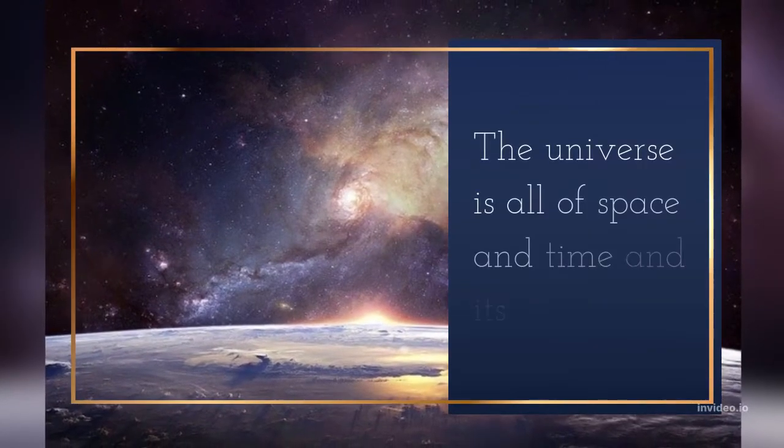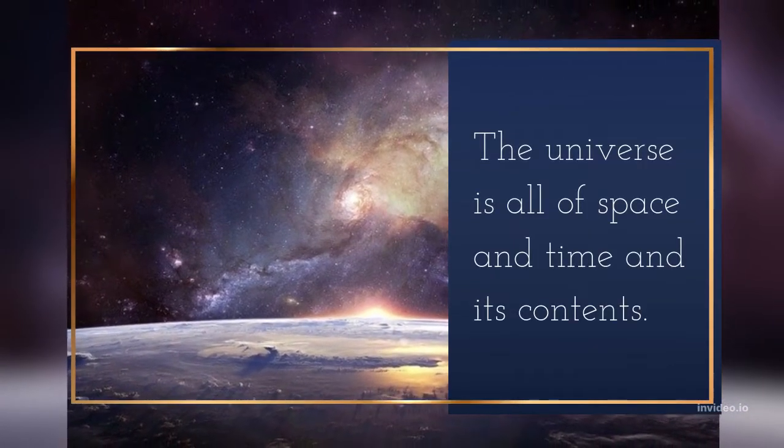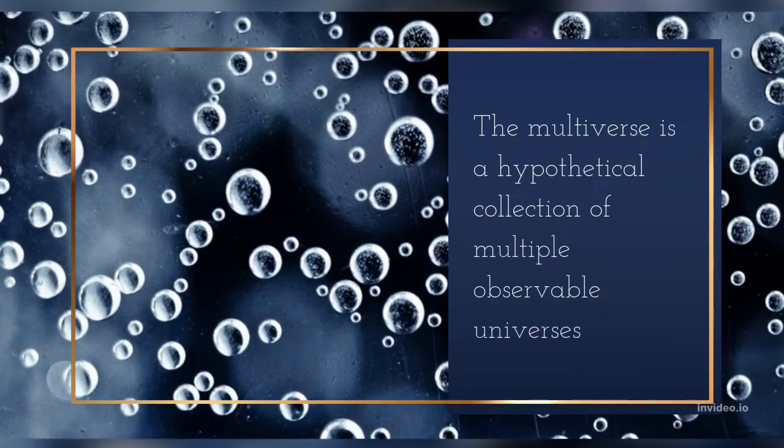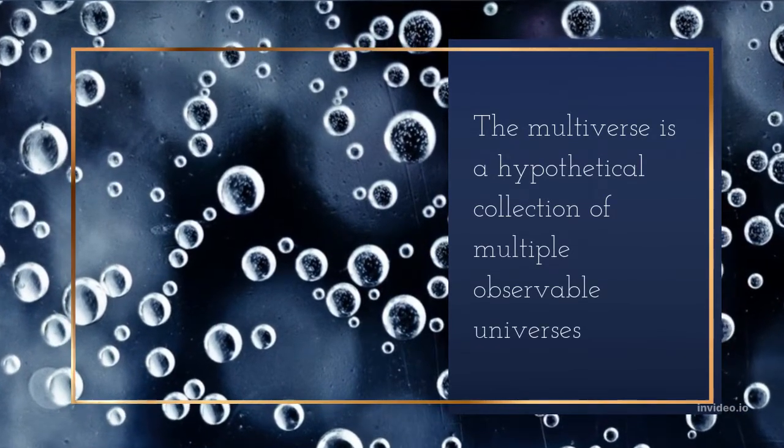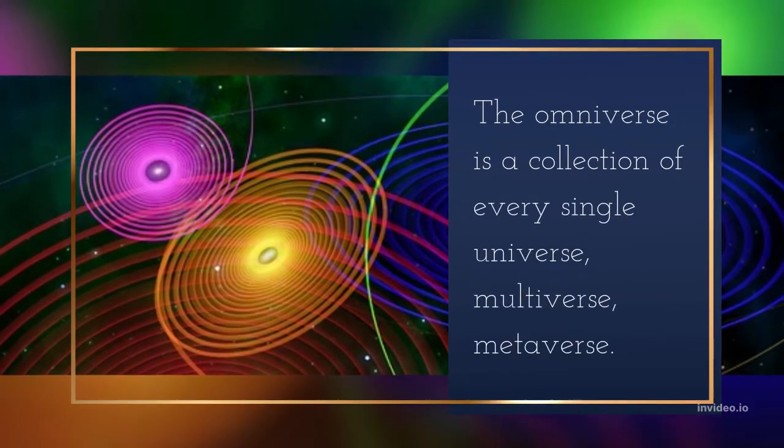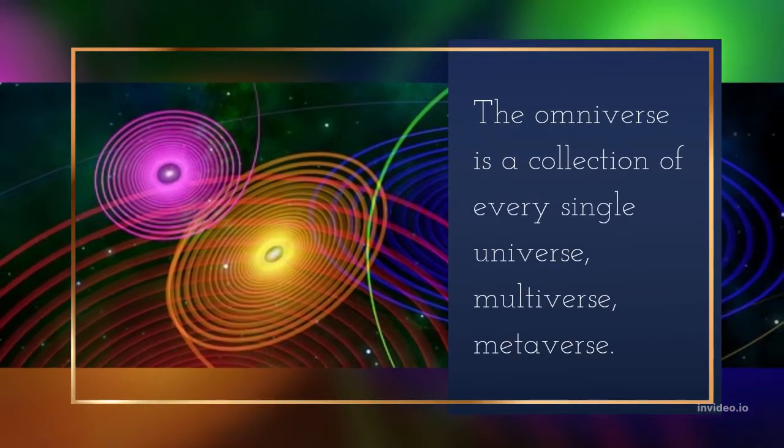The universe is all of space and time and its contents. The multiverse is a hypothetical collection of multiple observable universes. The omniverse is a collection of every single universe, multiverse, metaverse.